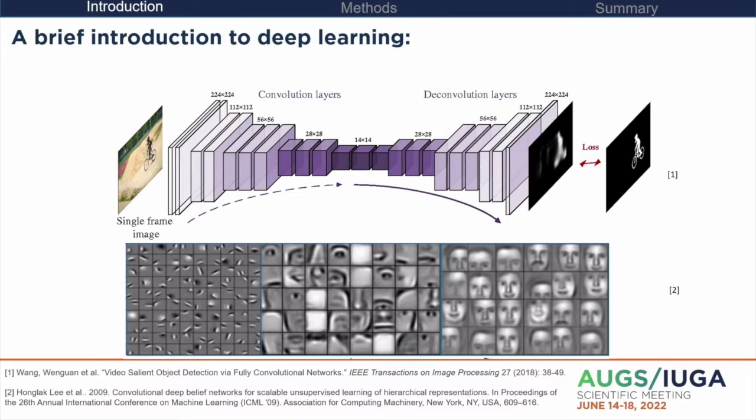This loss is then fed back to the network and all of these layers will change by a little or by a lot depending on how big or small your error is. This process is repeated for hundreds or thousands of images over time, and then the loss starts to go towards zero and you've trained your algorithm.